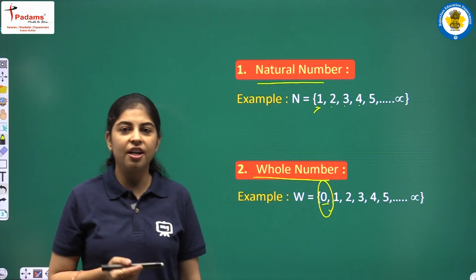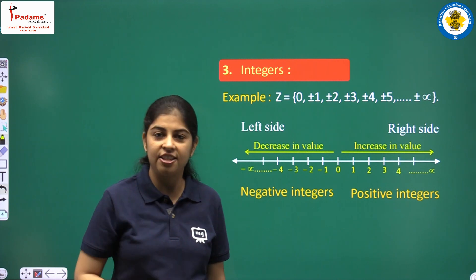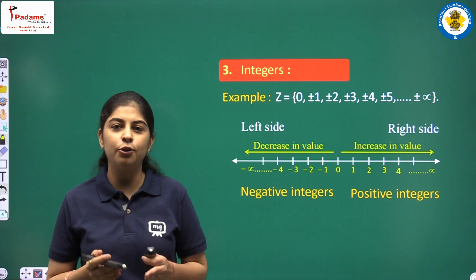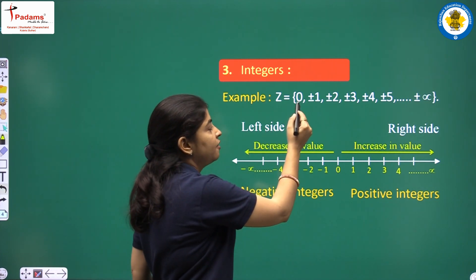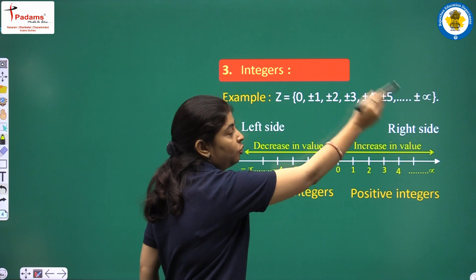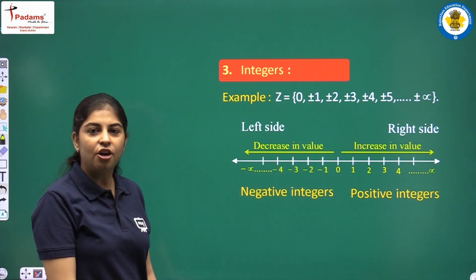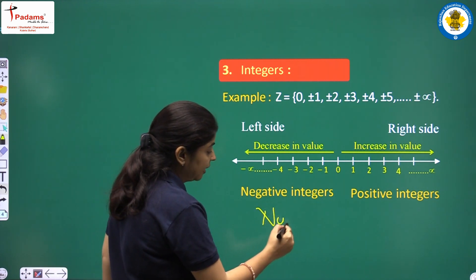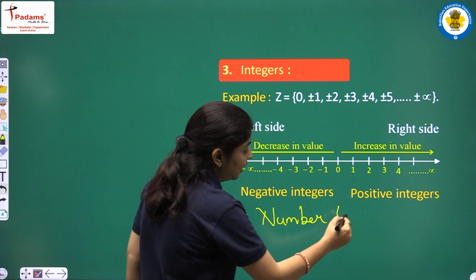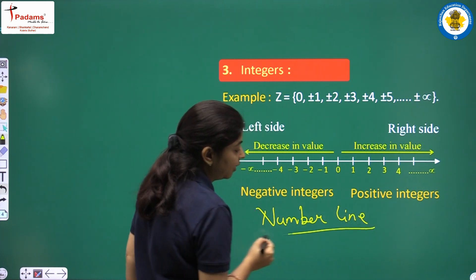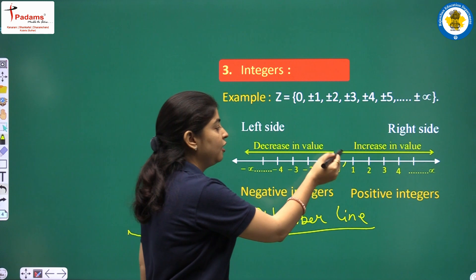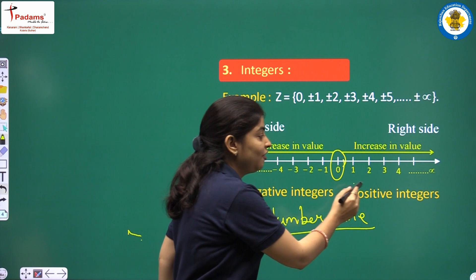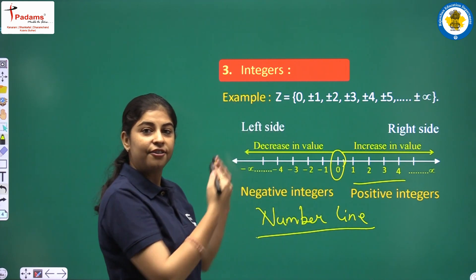The next definition is integers. Integers are basically the set of positive and negative numbers including 0. So integers are: 0, ±1, ±2, ±3, up to ±infinity. On the number line, 0 is at the center, all positive integers are on the right-hand side of 0, and all negative integers are on the left-hand side.